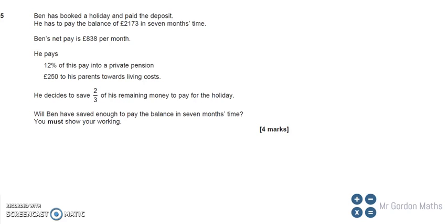Okay guys, question 5 on paper 1. Ben has booked a holiday and paid the deposit. He has to pay a balance of £2,173 in 7 months time. Ben's net pay is £838 per month.